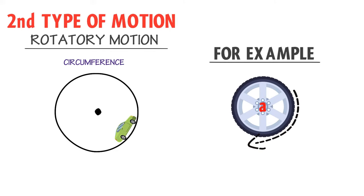Similarly, the motion of the hands of a clock, the motion of a fan, the motion of Earth, and the motion of an electron around the nucleus are all types of rotatory motion.